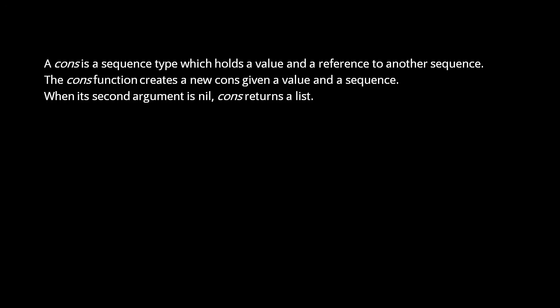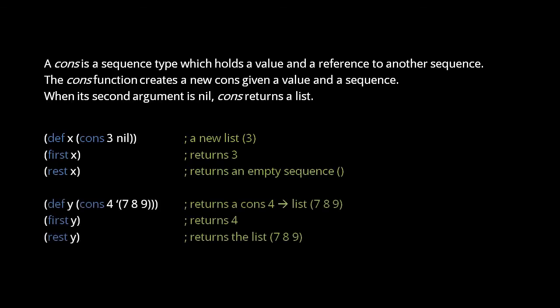The cons function creates a cons, though if the second argument is nil, cons returns a list instead. Here, this first call to cons returns a list with one element 3, but the second call to cons returns a cons, which has the value 4, and references the list...